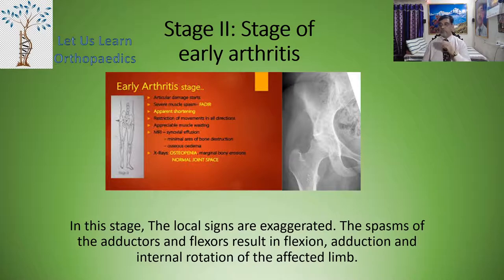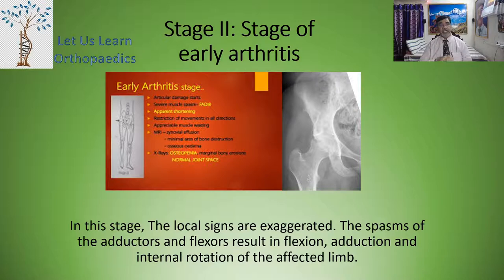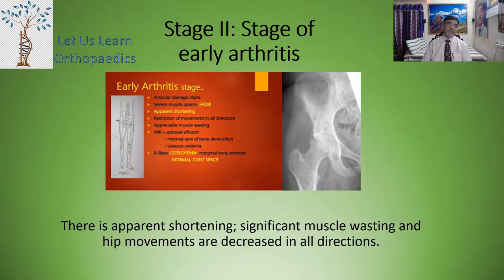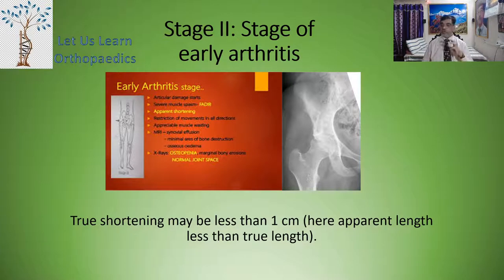Stage 2 — stage of early arthritis. Here the local signs are exaggerated. The spasm of the adductors and flexors results in flexion, adduction, and internal rotation of the affected limb. There is apparent shortening and significant muscle wasting. Hip movements are decreased in all directions — and whenever movements of any joint are decreased in all directions it is suggestive of arthritis. The true shortening may be less than one centimeter. The apparent length is less than the true length.